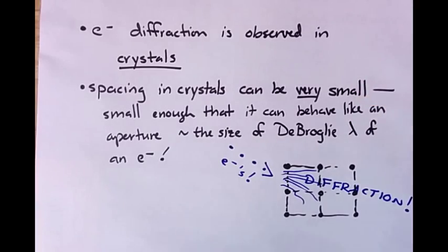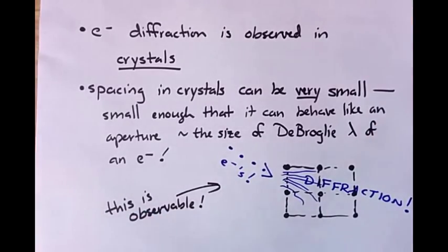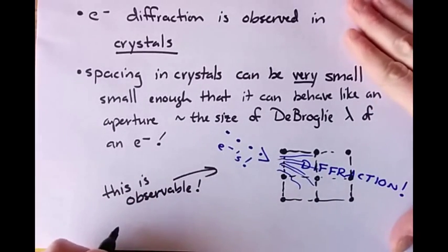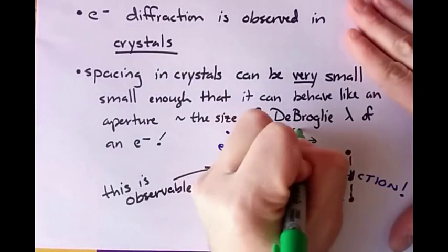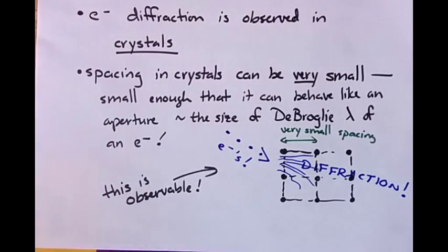But this behavior of electrons behaving like waves, it is there. It exists in nature. But it only exists when the aperture is very, very small on the order of the de Broglie wavelength. And that's why we normally can get away with thinking about the electron as behaving like a particle, even though it does exhibit some behavior that we would associate with waves.